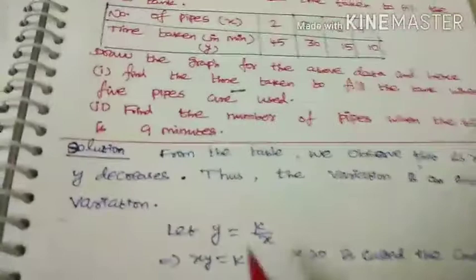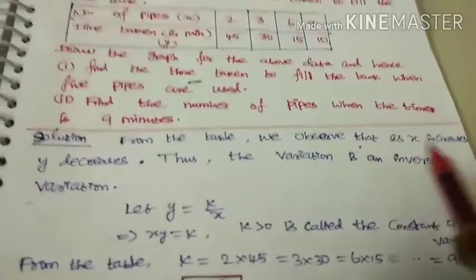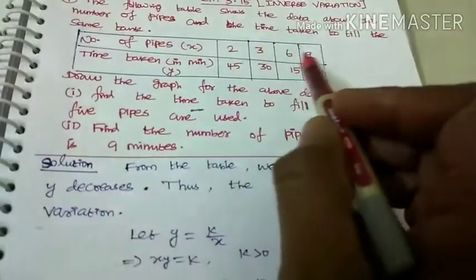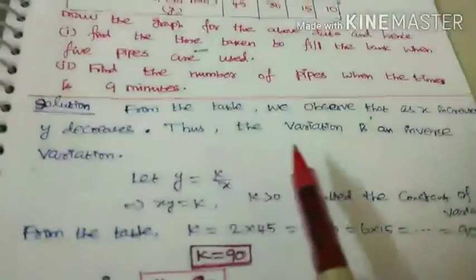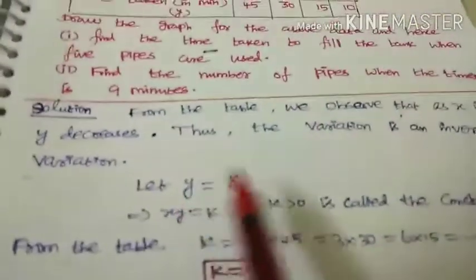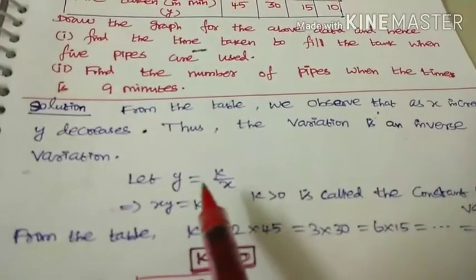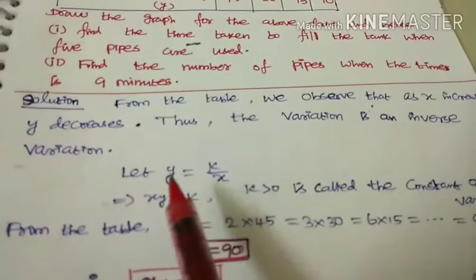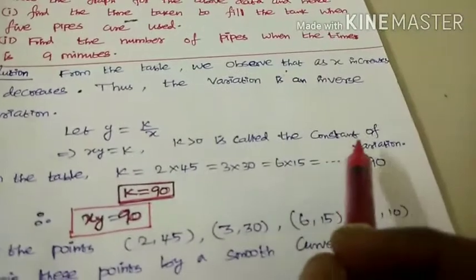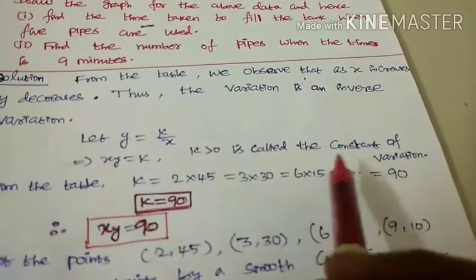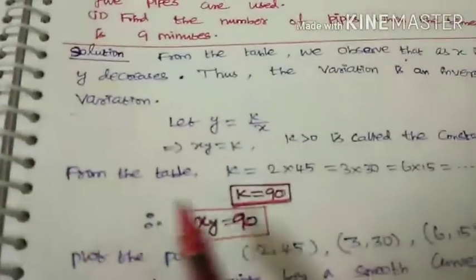From the table, we observe that as x increases, y decreases — as the number of pipes increases, the time decreases. So this is an inverse variation. The inverse variation formula is: y is directly proportional to 1 by x, that is y equals k by x, where k is the constant of variation, k greater than 0, so xy equals k.